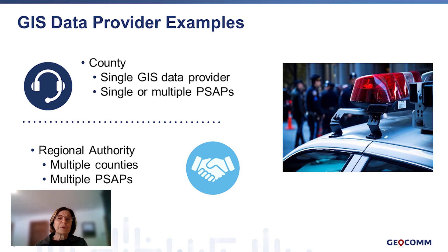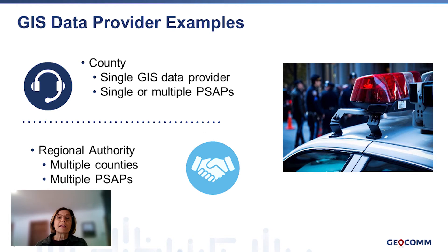Now that we know what it's used for, let's look at different configurations. It's been commonly stated that every primary PSAP has its own provisioning boundary. That's true in the case where a county GIS department supports a single PSAP in that county. In that case, the provisioning boundary would be the county boundary, which is the GIS responsibility of the county GIS department. But if the county GIS is supporting two PSAPs within the county, the provisioning boundary would not be the individual PSAPs — it would be the county boundary still.